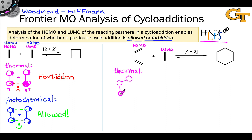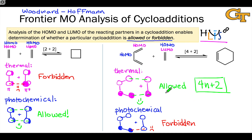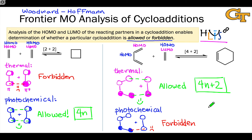The 4+2 case is allowed thermally and forbidden photochemically. The general rule we can pull from this is that for thermal cycloadditions, the total number of pi electrons involved must be 4n+2. On the other hand, allowed photochemical cycloadditions have a total number of electrons that is a multiple of 4, or 4n. So 2+2, 4+4, 6+6, 8+8, etc. are all allowed photochemically, while the allowed thermal cycloadditions include 4+2, 6+4, and any total number of pi electrons that is 4n+2.